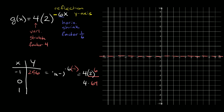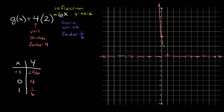The last two points are zero gives four, and one gives one sixth. Plotting our three points: negative one, 256 is way up there; zero, four is right here; and one, one sixth is somewhere down near the axis. Connecting the dots with the asymptote at y equals zero, we get our graph. The domain is all real numbers, and the range is from zero to positive infinity — not including zero.